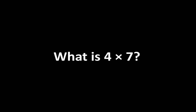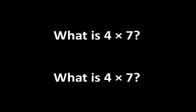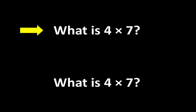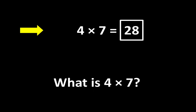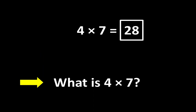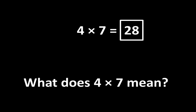Every now and then you might hear someone ask, what is 4 x 7? And you may hear someone else answer, 4 x 7 is 28. What is interesting is that this question can mean several different things. When someone asks what is 4 x 7, what they might mean is: 4 x 7 is equal to what number? The answer is 28. But they may also know there are many other important ideas — they may be wondering what does 4 x 7 mean? In this video, let's take a closer look at both of these ideas.